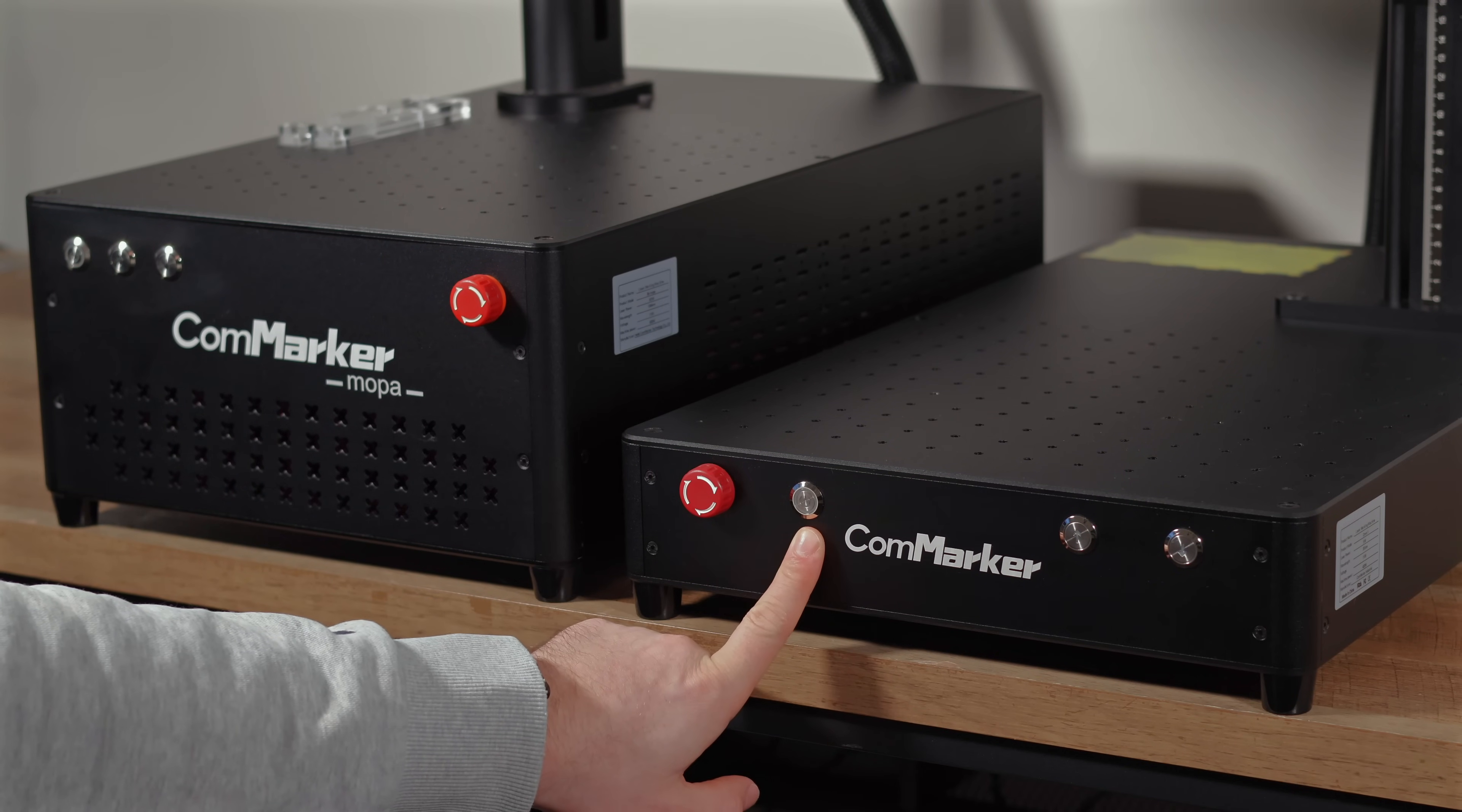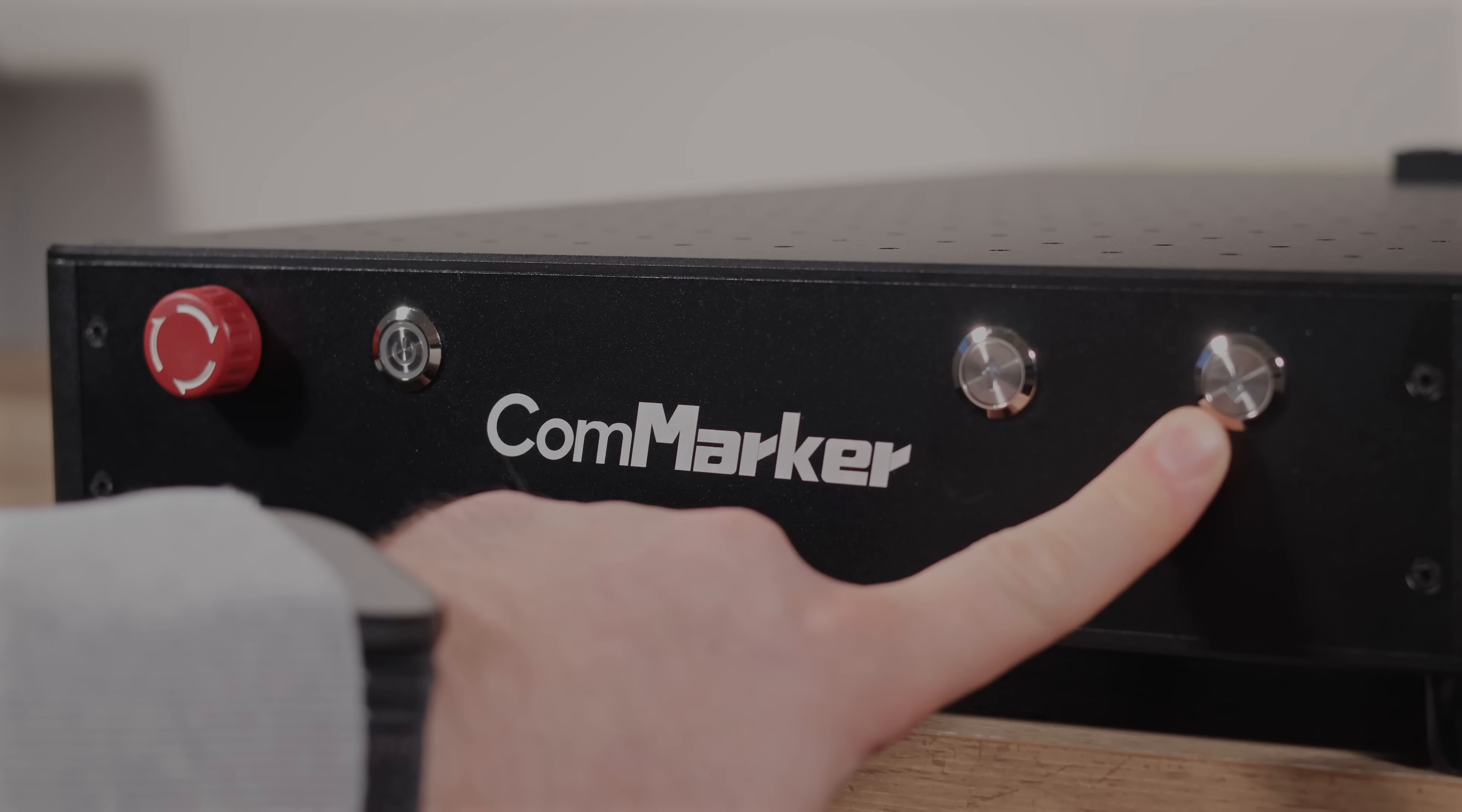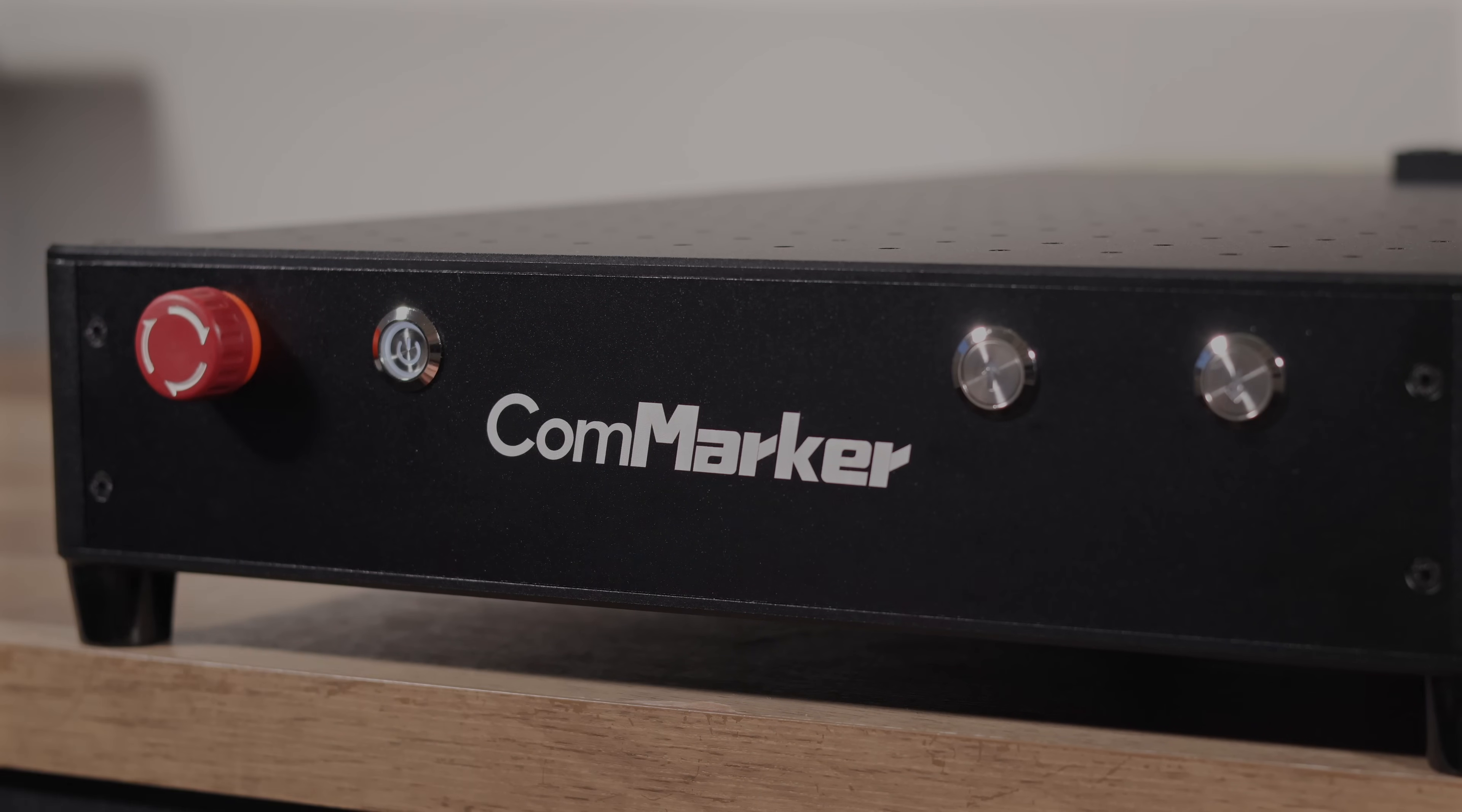On the front of the machine, you'll find a familiar array of buttons. These include the standard power button, up and down buttons to adjust the laser focus, and an emergency stop button for added safety. We'll unlock the emergency stop and press the power button to get the Omni-1 up and running in just a moment. But before that, let's take a closer look at the rest of its features.